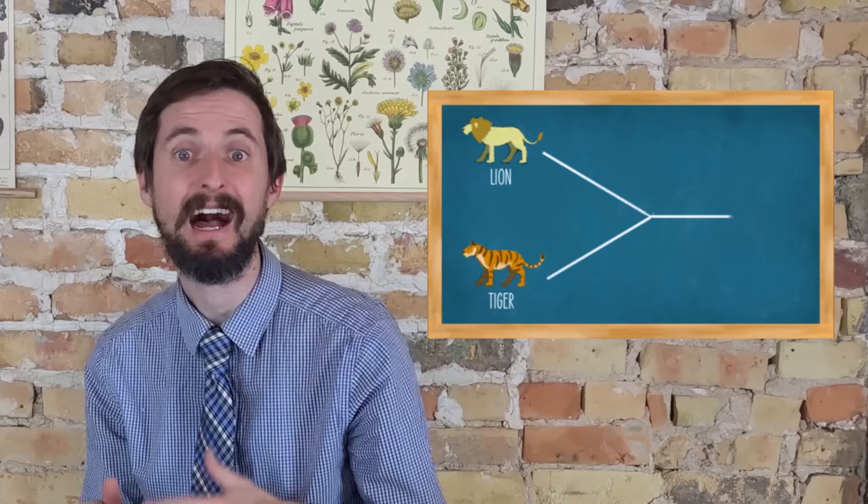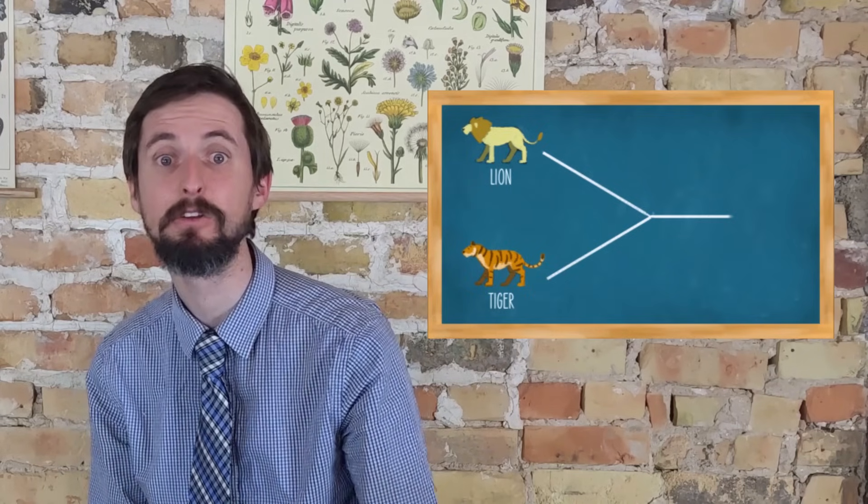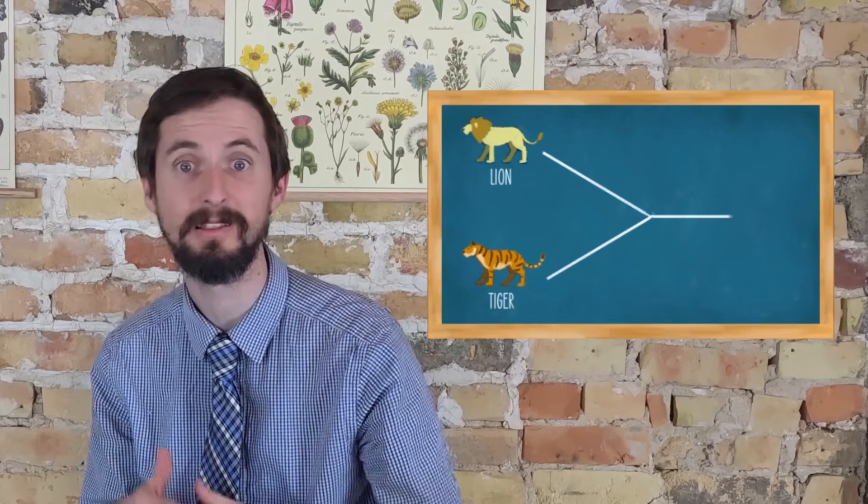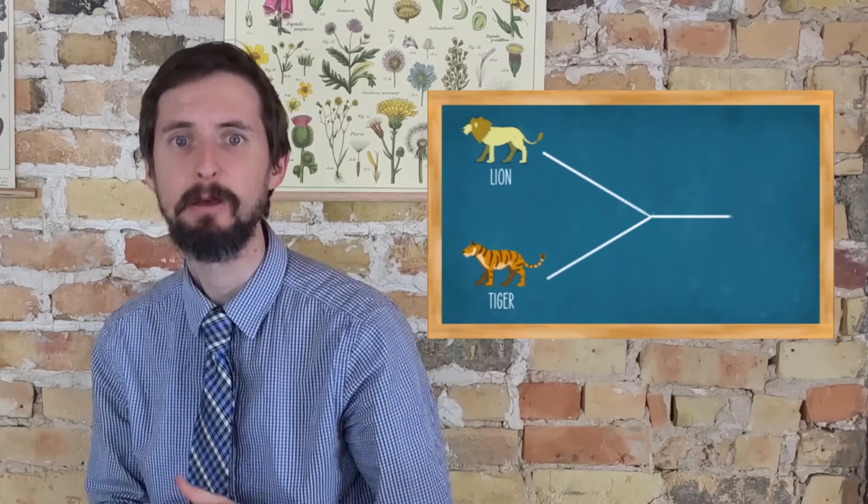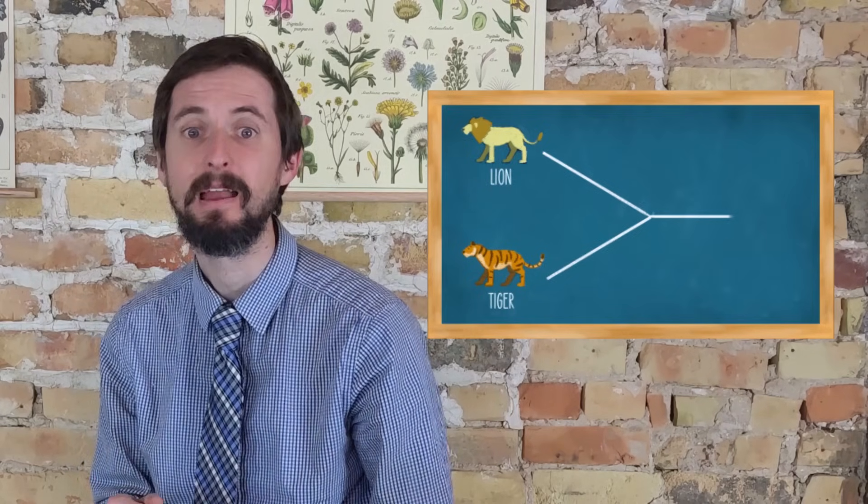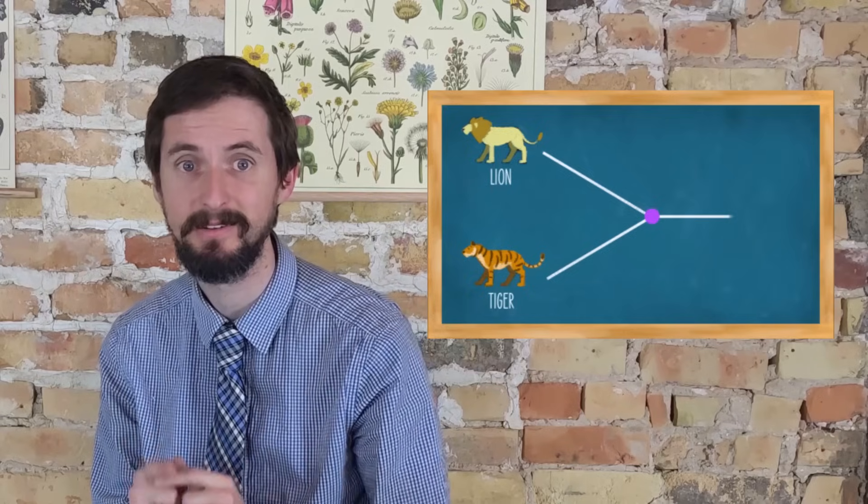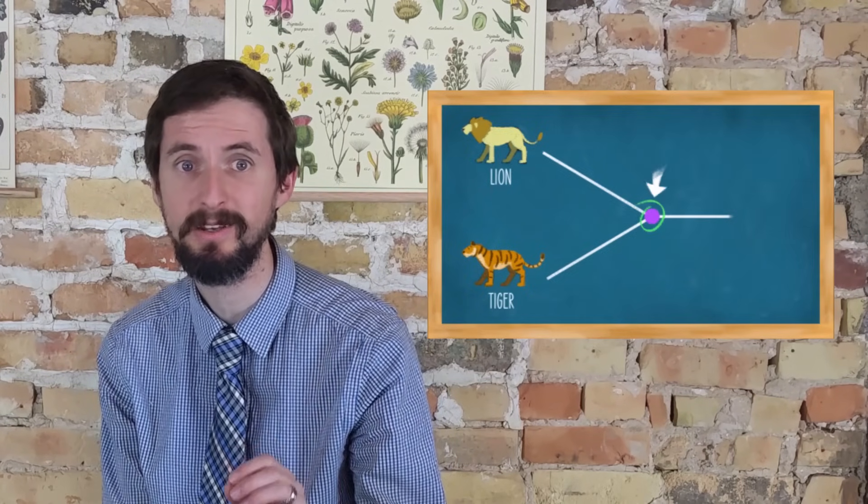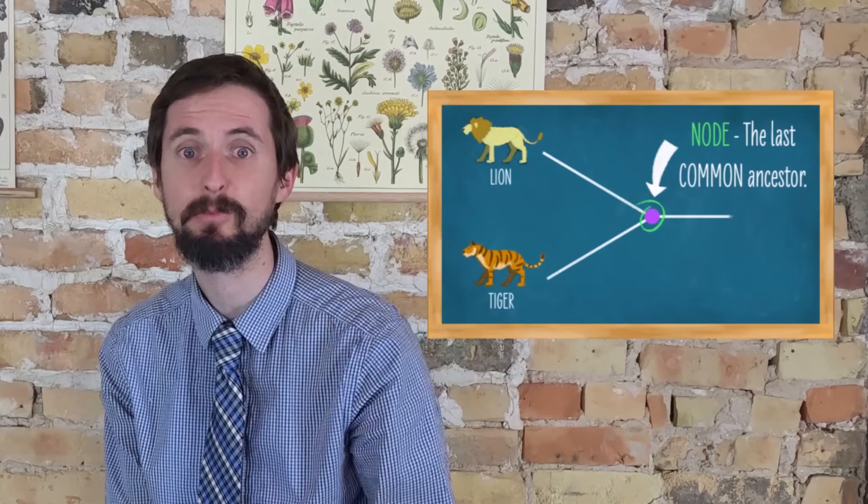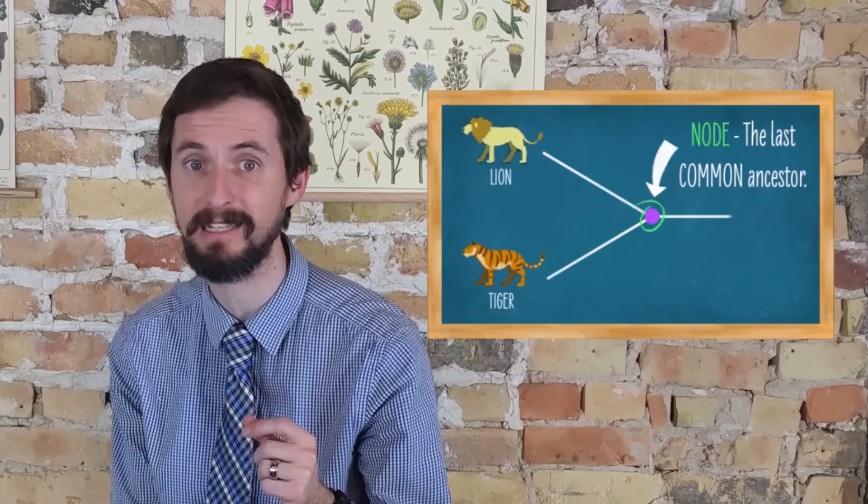I might draw something like this. In this case I can see that today I have two distinct organisms, lions and tigers. But if I follow the lines back in time long enough, I will run into a point where the two lines intersect. This point of intersection is called a node, and it represents the last common ancestor of both lions and tigers.